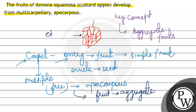These fruits are called etaerio — an etaerio of berries, small aggregates of berries. These fruits are full of fruitlets. The fruits are developed from a multi-carpellary, apocarpous ovary — so this statement is TRUE and correct. I hope you understood well. Best of luck and thank you.